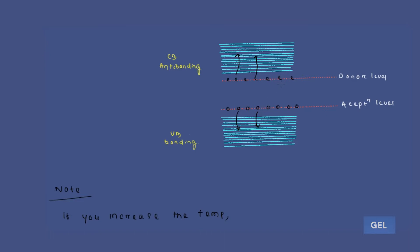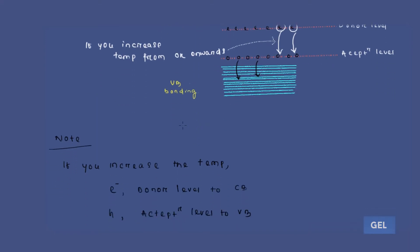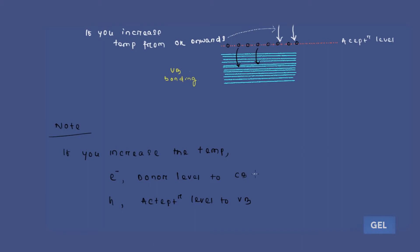The more interesting thing is that sometimes electrons from the donor energy level also come to the acceptor level — some electrons arrive at your acceptor level as well when you increase the temperature. So we can add this extra point: electron moves from donor level to conduction band, plus donor level to acceptor level.